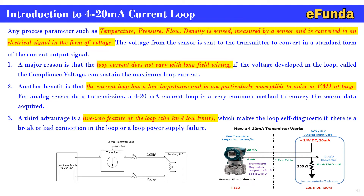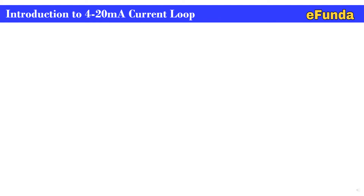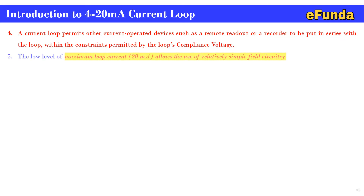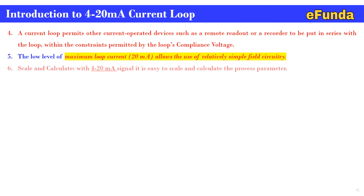Fourth, a current loop permits other current-operated devices such as a remote readout or recorder to be placed in series within the constraint permitted by the loop compliance voltage. Fifth, the low maximum loop current of 20 milliamp allows the use of relatively simple field circuitry. Sixth, it is easy to scale and calculate the process parameter with a 4 to 20 milliamp signal.